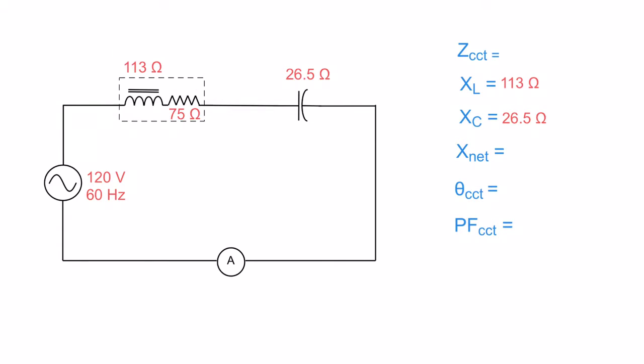Now when we're working out our X net, our X net is just going to be 113 minus 26.5 to get our net reactance. There you have it, 86.5 ohms. Now with that in mind, we also have this resistance. So we're going to build ourselves an impedance triangle. When we build this impedance triangle, we're going to use the resistance on the bottom like we always do.